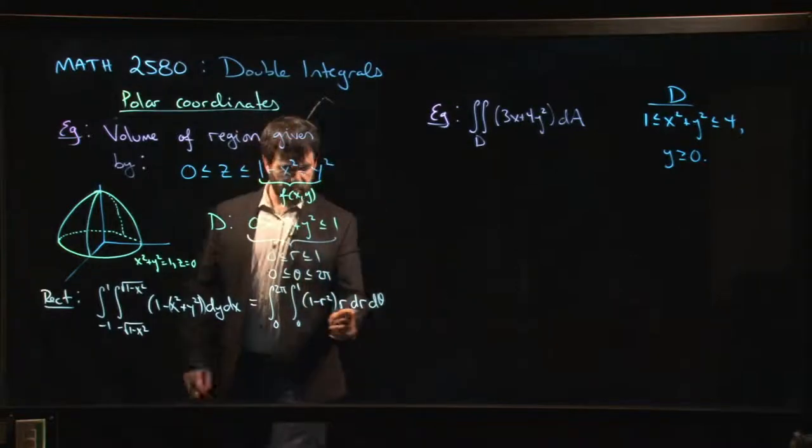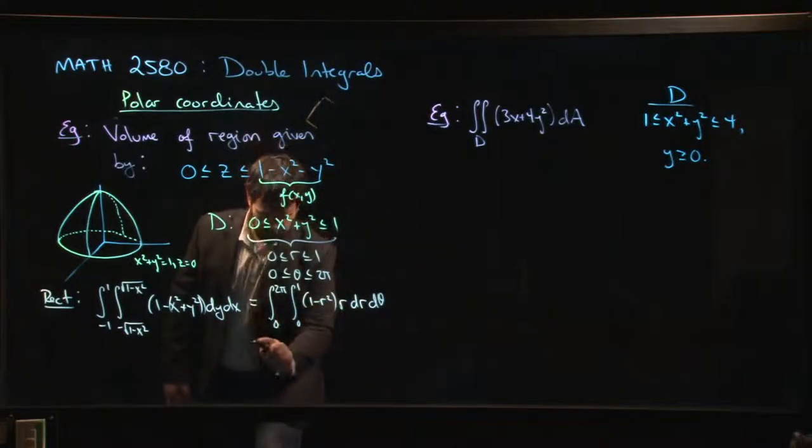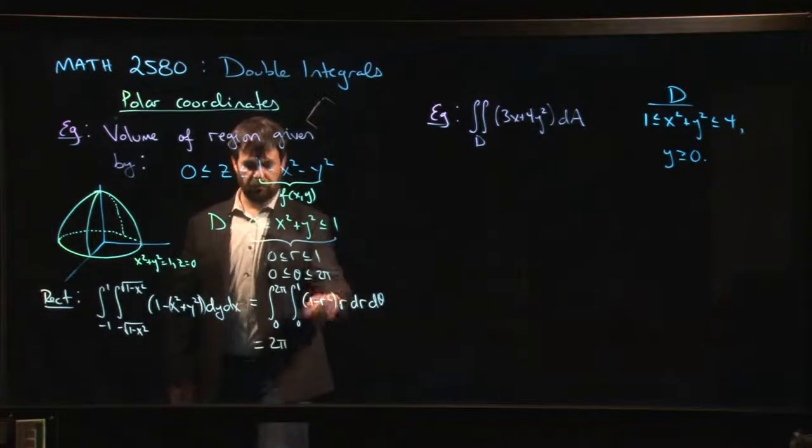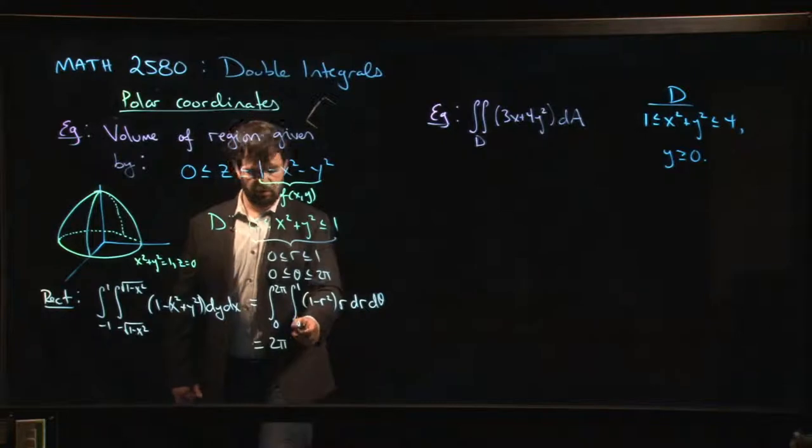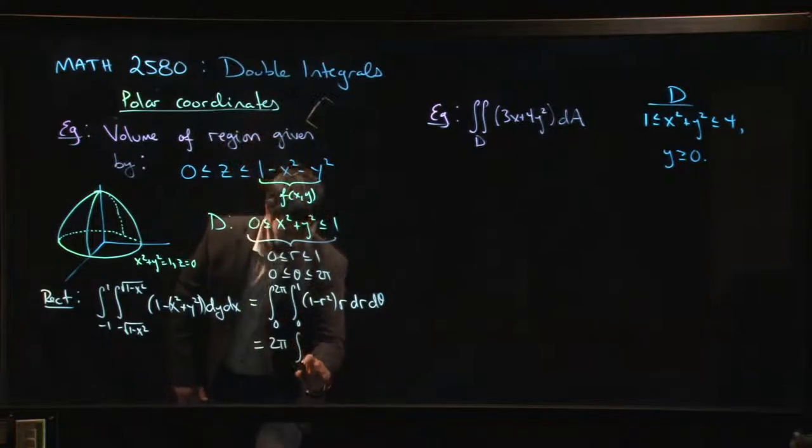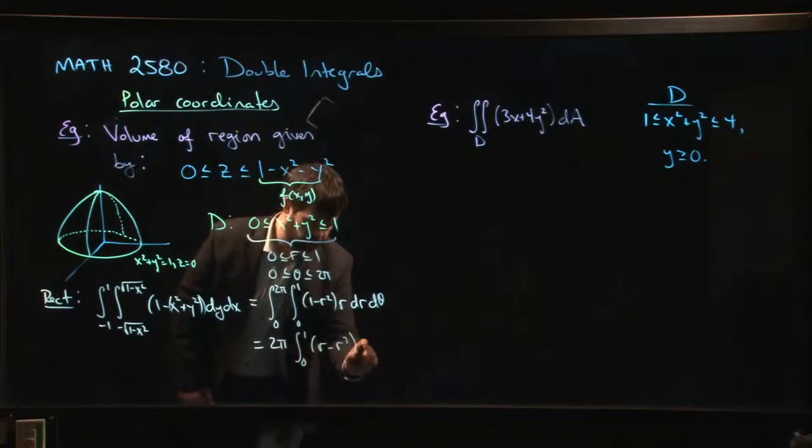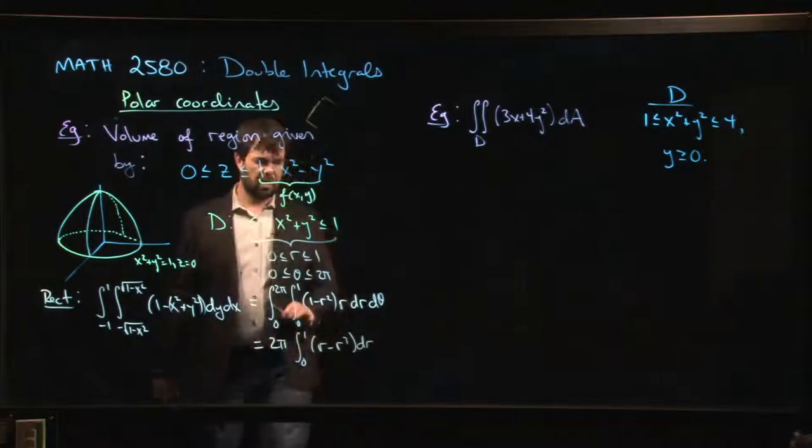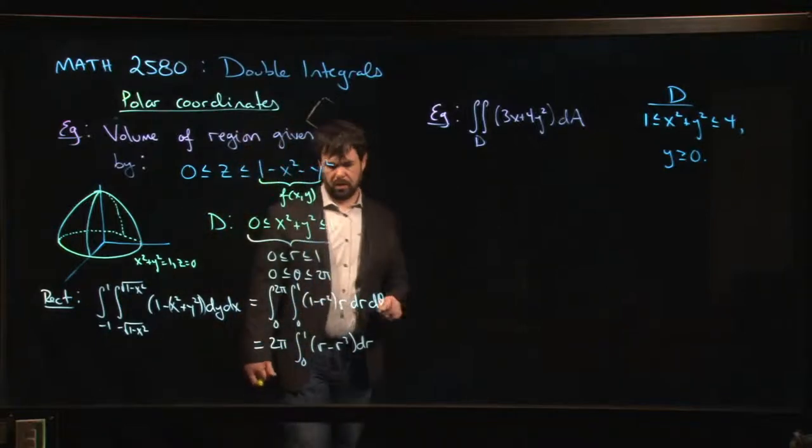And now you go from here. Now, nothing depends on theta. You can do the theta integral right away if you want. We just get 2π because it's constant with respect to theta. We're going from 0 to 2π. So 2π integral from 0 to 1, we have r minus r cubed. And that's a simple integral.